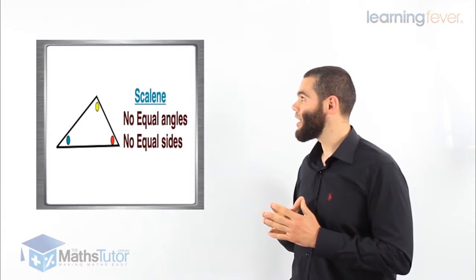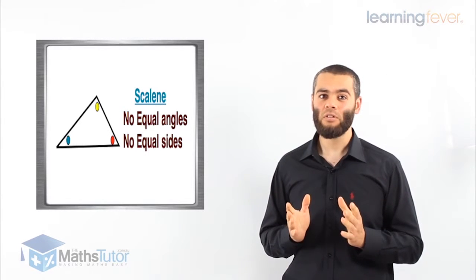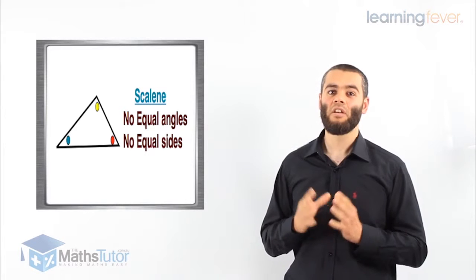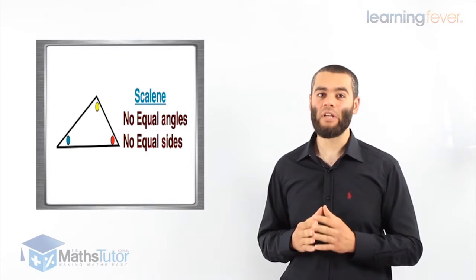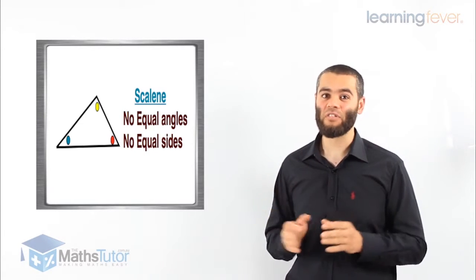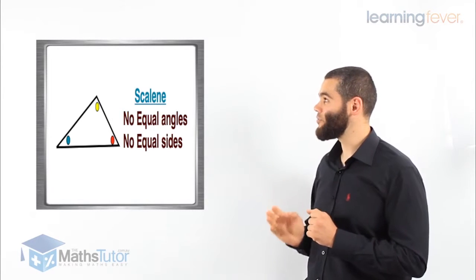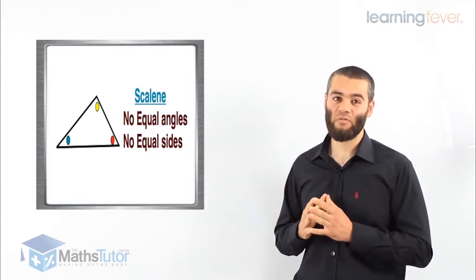The first type we're going to look at is the scalene triangle. The scalene triangle has two main features: it has no equal sides and no equal angles. So all the sides in a scalene triangle are different, and all the angles in a scalene triangle are different. That's why they're marked in different colors.